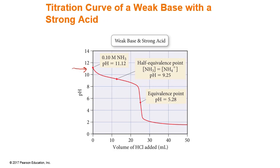We can see that the portion of the curve near the equivalence point is not quite as steep as it would be with a strong acid being titrated. We can also look at the equivalence point and we notice that it is in the acidic range, which means it is not 7, so we know it is not a strong base with a strong acid.